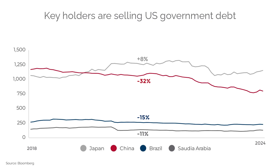This large supply is coming at a time when some big holders of U.S. debt have been reducing their holdings. China, for example, used to be the biggest holder of U.S. government debt and has been reducing its holdings since at least 2018, and more aggressively since 2022. Brazil and Saudi Arabia have also been reducing their holdings. This goes back to what Larry Fink told us — the U.S. cannot take for granted that people will still want to buy their debt in the same size and at the same price, and this will have consequences.